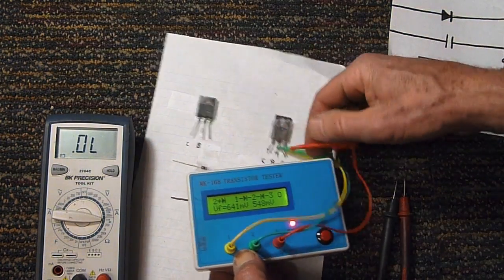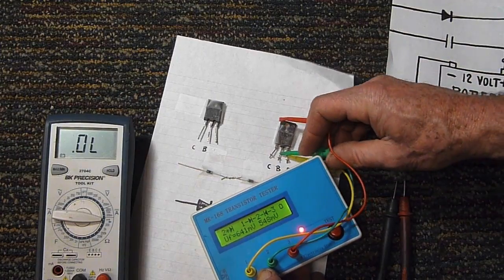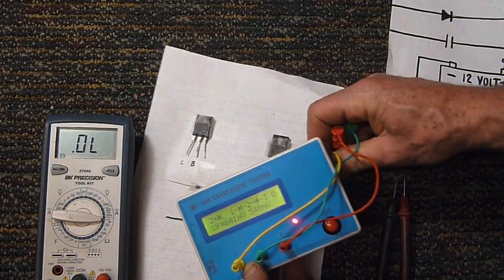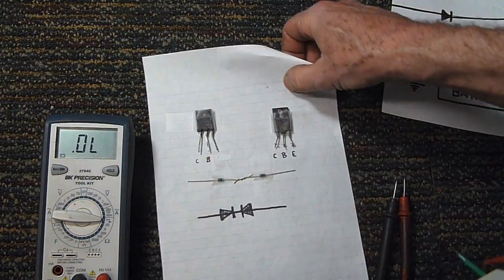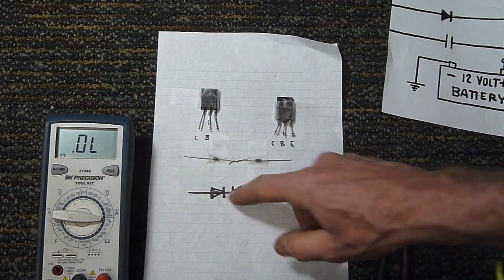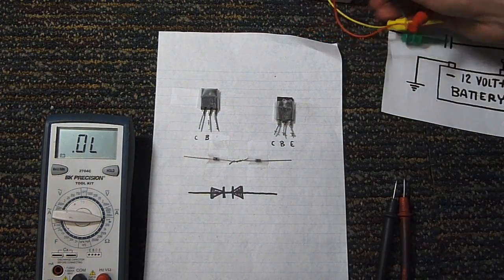By the way, don't always assume that something that looks like this is a transistor. Nowadays, you never know. It could be a diode. Anywhere, there you have it.